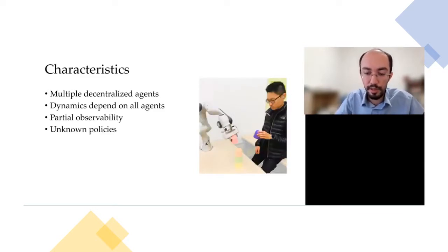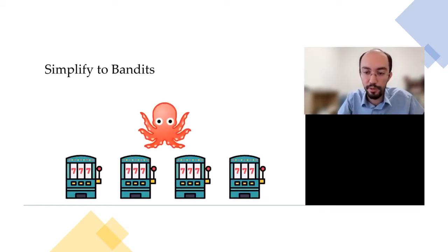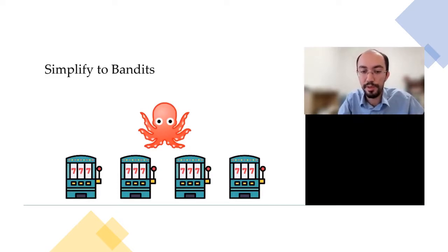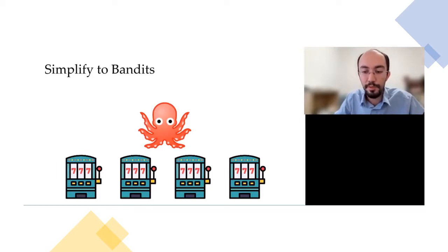Finally, the policies of other agents will be unknown to me — and that's what I'm trying to learn. To theoretically analyze this, we decided to simplify the problem. The simplest form of reinforcement learning problems is probably multi-arm bandits, where we have one agent trying to find the bandit with the highest expected reward. Every time it pulls a suboptimal arm, it incurs some regret, and the goal is to minimize cumulative regret. This problem covers many characteristics of single-agent reinforcement learning, such as the exploration vs. exploitation trade-off.